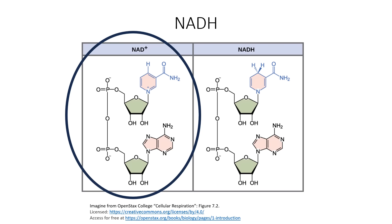So really NAD+ takes two electrons from an intermediate. Once it has done that, it becomes NADH. The H implies the addition of a hydrogen. Here you can see NAD+ only has one hydrogen, and once it becomes NADH it has an additional hydrogen. You will also notice that the molecule is no longer positive, which means that additionally it gained another electron.